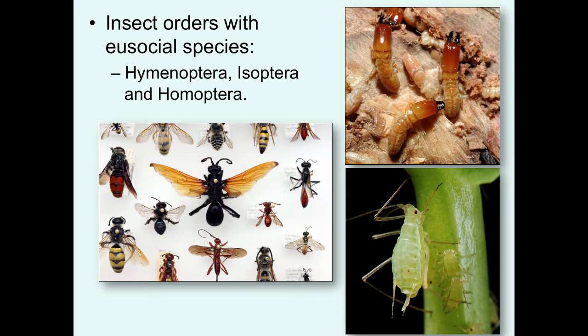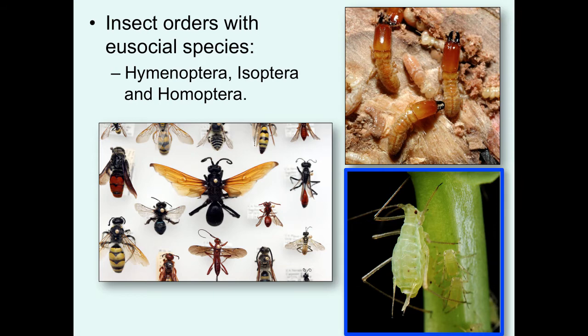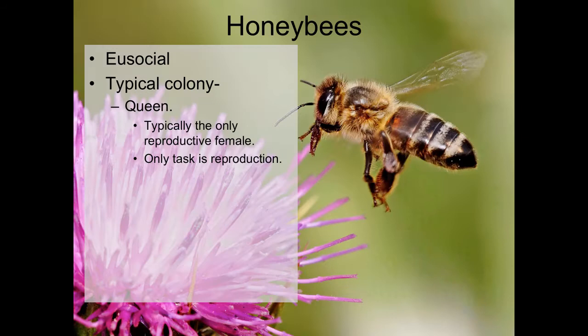Honeybee workers will also defend the hive with modified ovipositors into stingers. Eusociality is fairly widespread in different insect orders. It's seen in the Hymenoptera, which include the bees, ants, and wasps. It's also seen in the Isoptera, the termites; in Homoptera, the true bugs, which includes aphids; and we'll also talk about the Thysanoptera, the thrips.